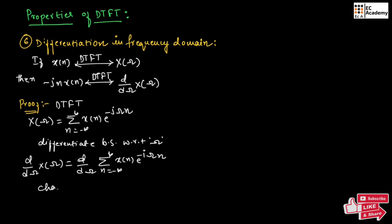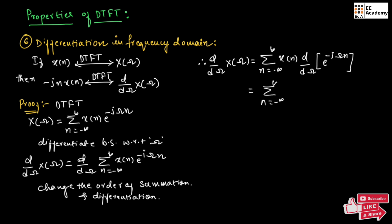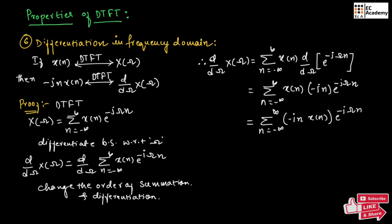Now, let us change the order of summation and differentiation. Therefore, we can write d by d omega of x of n exponential to the power of minus j omega n. So, we can write the above equation as summation of n equals minus infinity to infinity of x of n. If we differentiate the exponential term, we will obtain minus j n exponential to the power of minus j omega n.